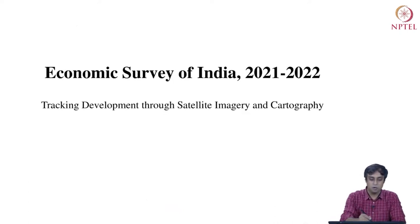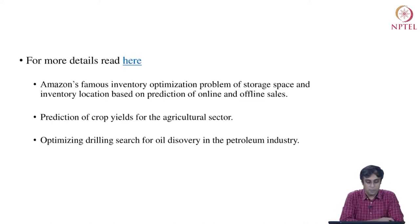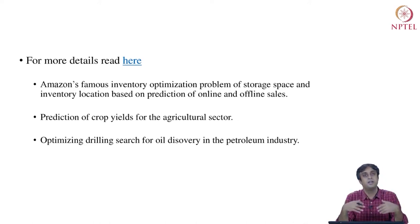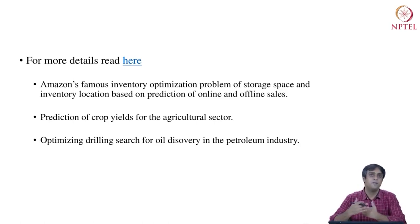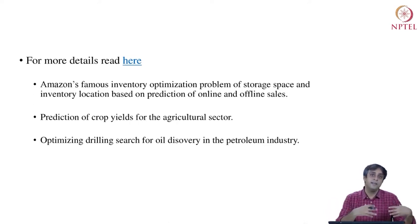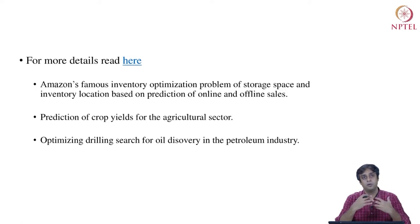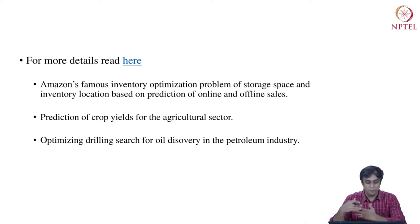There are other popular examples available via a hyperlink — including Amazon's famous inventory optimization problem, prediction of crop yields for the agricultural sector (more challenging in India due to smaller farms), and optimization of drilling search for oil discovery in the petroleum industry.